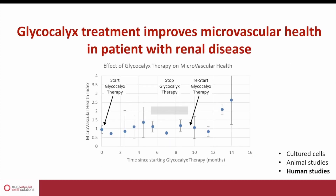In this individual, we monitored the development of the microvascular health score over time. This individual started out with a poor score — remember, the score ranges between 0 and 10, so 1 is a very poor score for microvascular health. When this individual started taking Endocalyx for the first time, the score started increasing to 1.5, a 50% increase after three to four months. Unfortunately, this individual ran out of Endocalyx product, stopped taking it for a few months, and the score dropped down to low scores again.